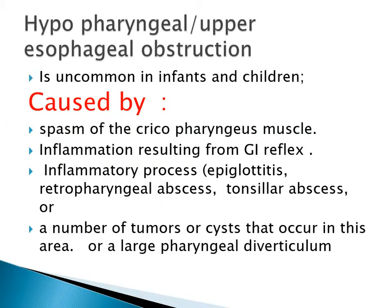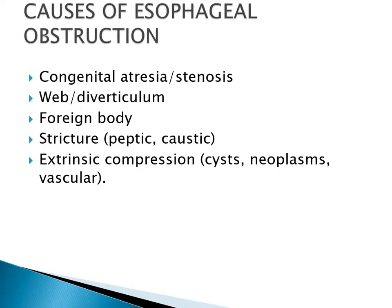Hypopharyngeal obstruction is uncommon in infants and children, caused by spasm of the cricopharyngeous muscle or inflammation resulting from GI reflux, inflammatory processes such as epiglottitis, retropharyngeal abscess, tonsillar abscess, tumors or cysts in that area, or a large pharyngeal diverticulum. Causes of esophageal obstruction: most common is congenital atresia. Others include web, diverticulum, foreign body, stricture, and extrinsic compression by cysts, neoplasm, or vascular anomalies.